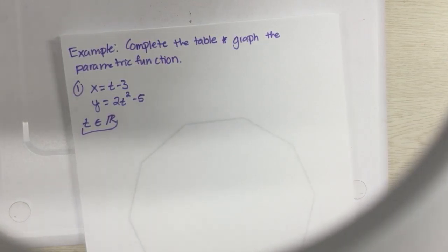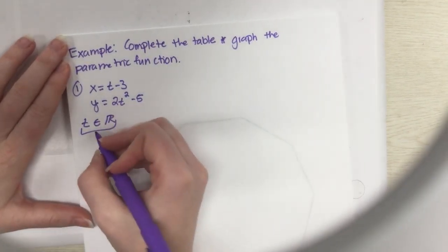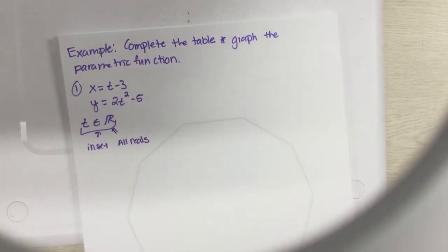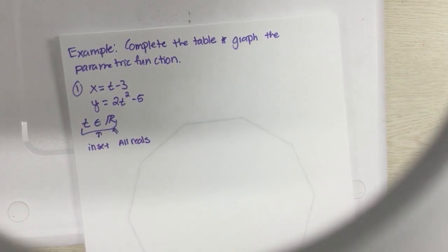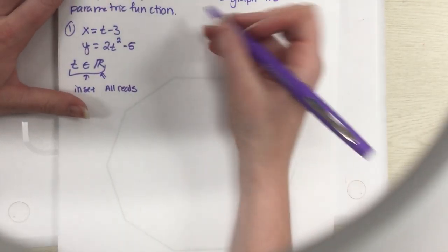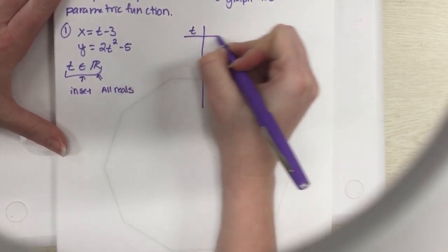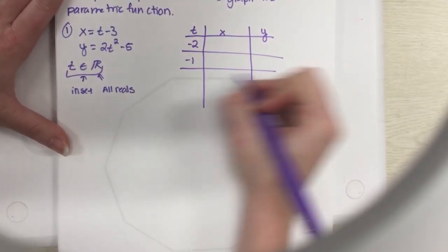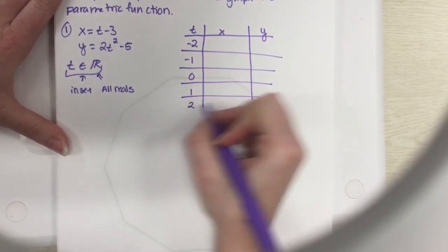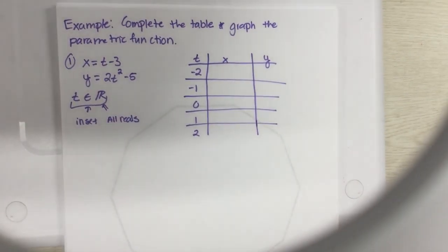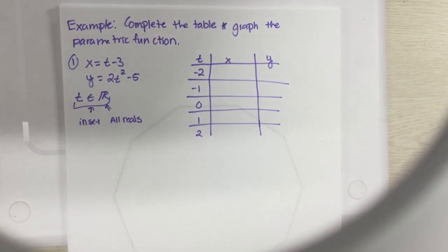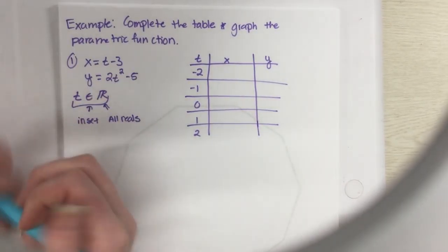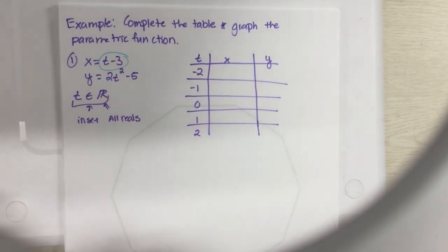And t is in the set of all reals. They won't put this on ALEKS, they'll put it in like actual words - t is all reals or something like that. Just remember this little weird symbol means in the set, and this means all reals. So t can be anything, this one's not really on a restricted domain. They'll have this chart for you to fill out with x, y, and they'll just have you do certain t values. We got t is negative 2, negative 1, 0, 1, and 2.